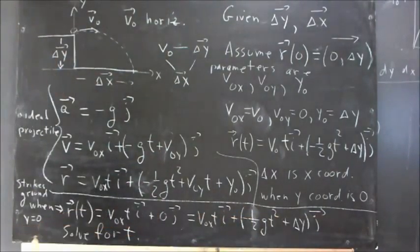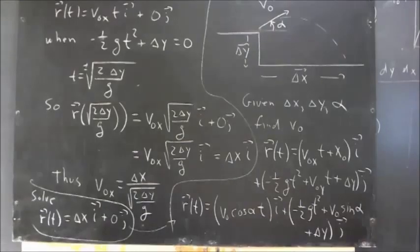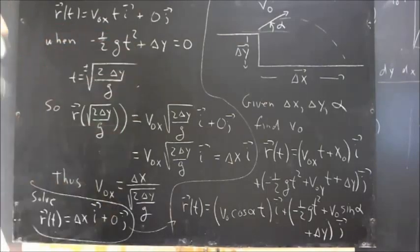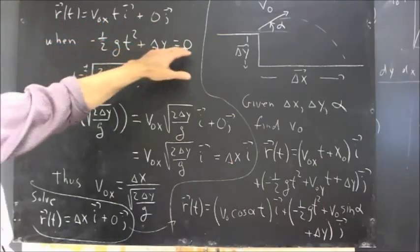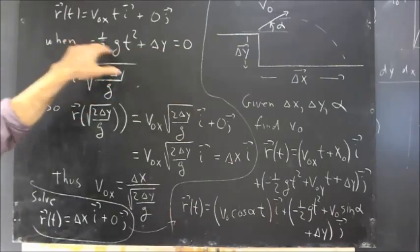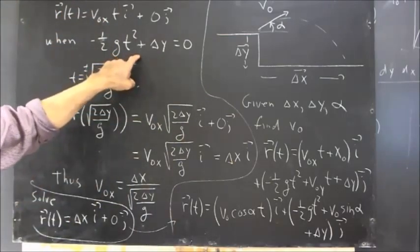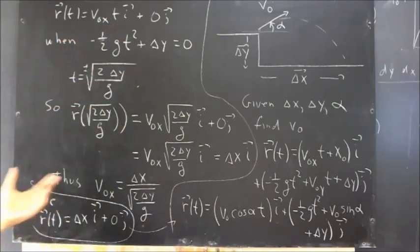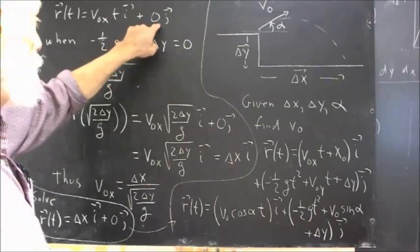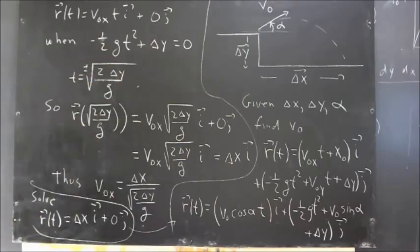Setting these to equal, we get an equation, a vector equation, for the time when the projectile strikes the ground. The r of t is v0 x t i plus 0 j, and that occurs when negative 1 half gt squared plus delta y equals 0. I haven't written out both equations, but this is the i-coordinate of a general point on the trajectory, and v0 x t is the x-coordinate. So when the j-coordinate is 0, this has to be 0, and we solve that and we get t equals plus or minus square root of 2 delta y over g.